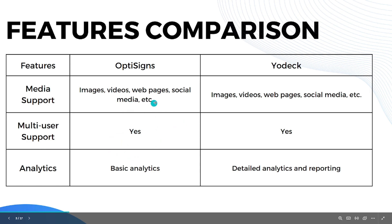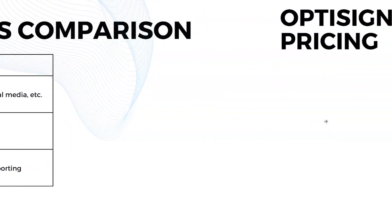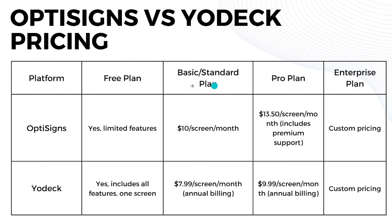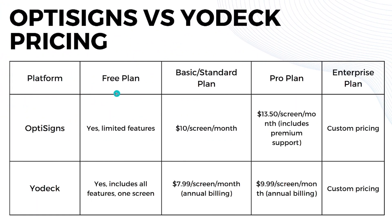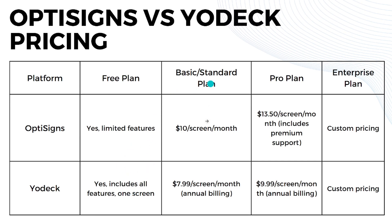Now let's talk about pricing. For the free plan, OptiSigns offers one with limited features, while Yodeck also has a free plan that includes all features but for one screen only. For the basic and standard plan, OptiSigns offers it for only ten dollars per screen per month.